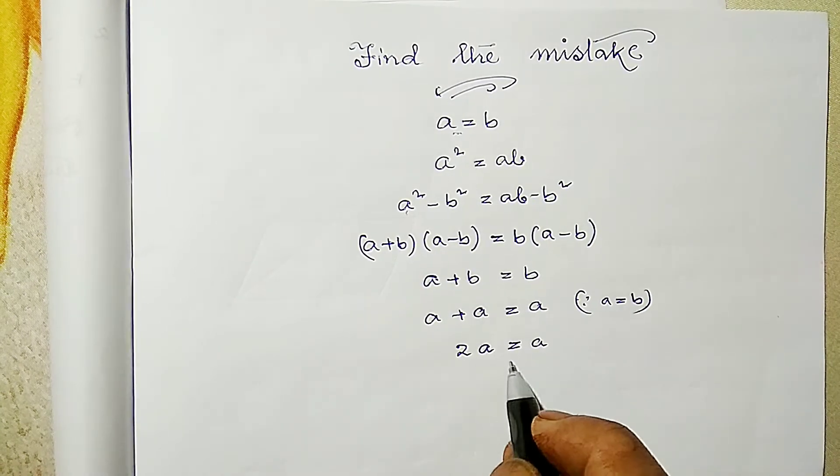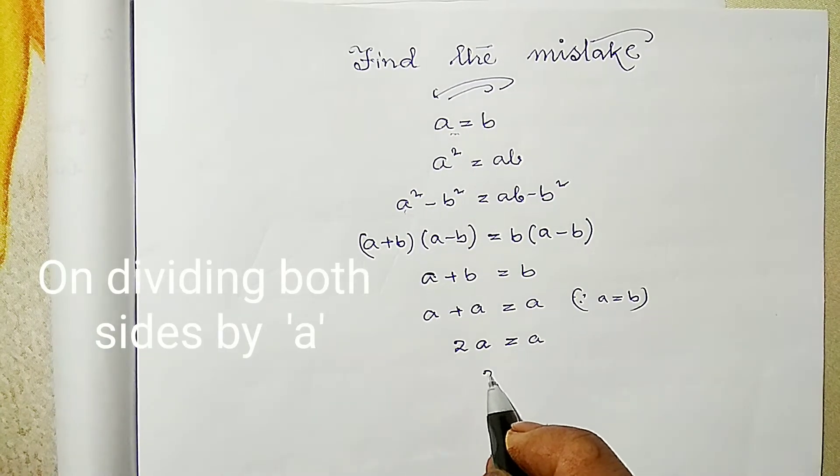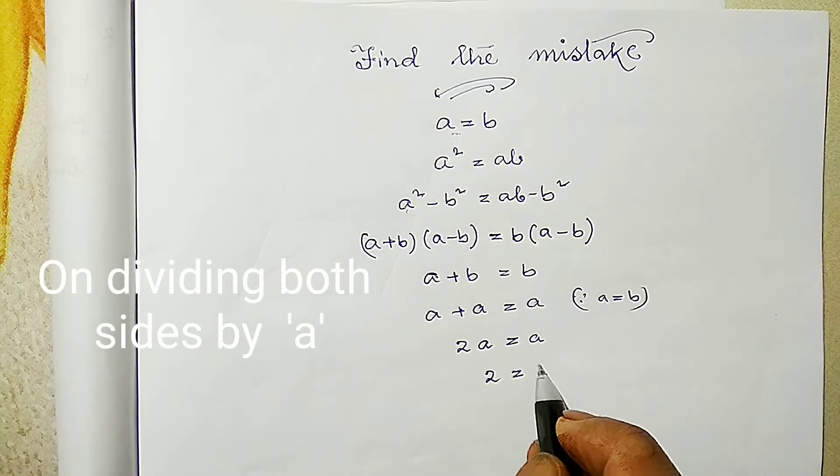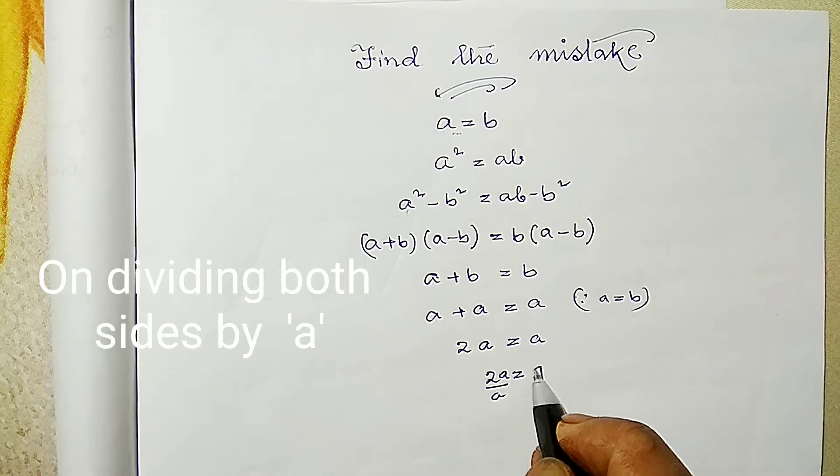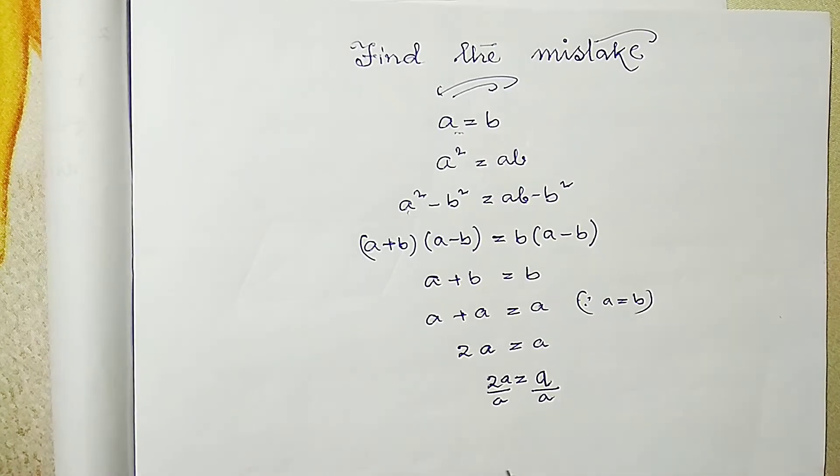And if I cancel a from both the sides, I am going to get 2 equals to 1. That means if I divide 2a by a and here also if I divide a by a, what I will get? a and a cancels, I am going to get 2 equals to 1.